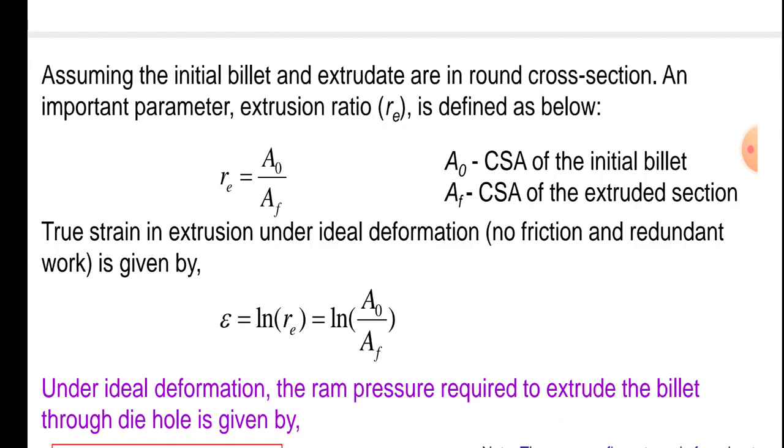True strain in extrusion under ideal deformation, no friction and redundant work, is given by epsilon equals log of Re, log to the base 10 of Re equals log to the base 10 of A0 upon Af. A0 is cross sectional area of initial billet and Af is cross sectional area of extrudate section.